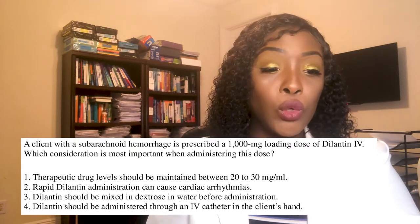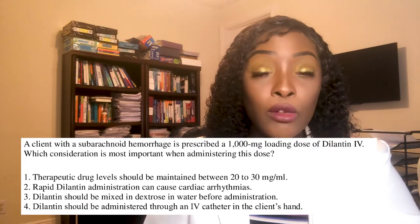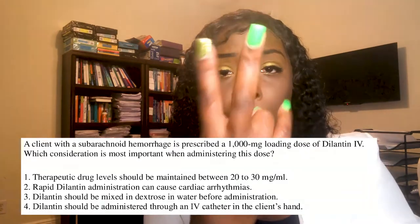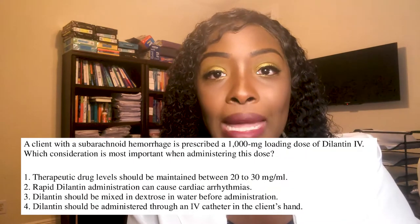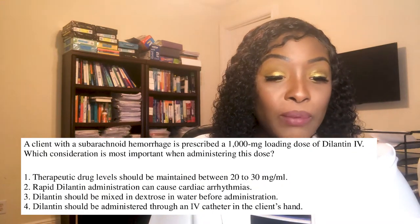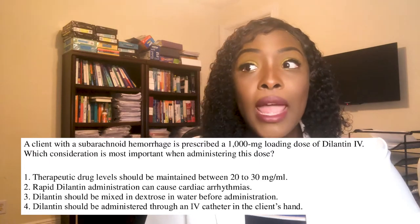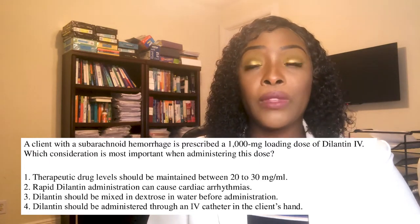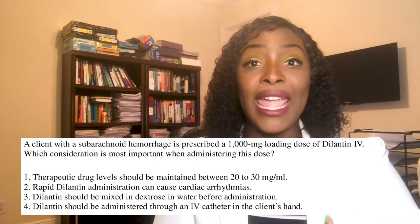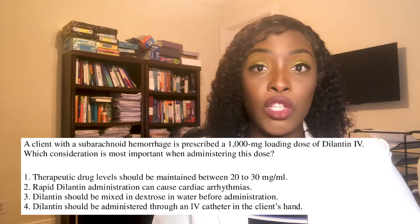Choice three: Dilantin should be mixed in dextrose in water — no. You do not mix Dilantin with anything. Choice four: Dilantin should be administered through an IV catheter in the client's hand — absolutely not. Dilantin can cause purple glove syndrome. You want to put it in a big vein like the antecubital space, not in small vessels such as the hand.